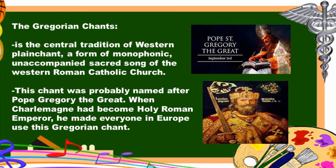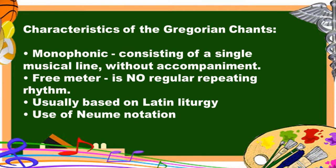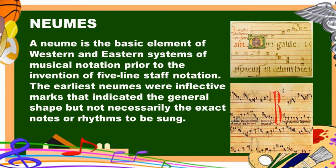What are the characteristics of Gregorian chants? First, it is monophonic, consisting of a single musical line without accompaniment. It is also free in terms of meter — there is no regular repeating rhythm. Usually based on Latin liturgy. And last, use of neume notation. Neume is the basic element of Western and Eastern systems of musical notation prior to the invention of five-line staff notation. The earliest neumes were inflective marks that indicated the general shape but not necessarily the exact notes or rhythms to be sung.